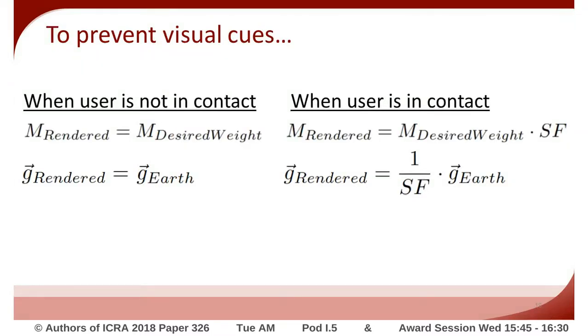In order to prevent any visual cues, the virtual object's mass and gravity are set to their original values when the user is not in contact with the virtual object.